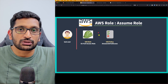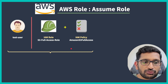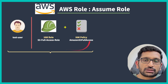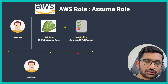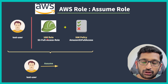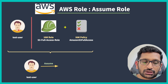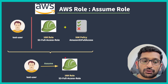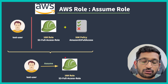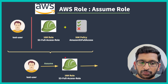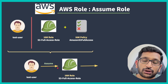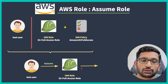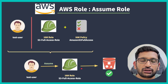That's where the assume role concept comes in. We need to combine these two objects - the user and the role which consists of the S3 policy. We will take that particular user and assume that particular role. Once we attach this role to the user, this user can assume the role and perform all S3-related actions on the S3 bucket.